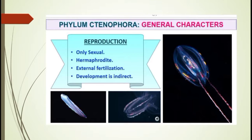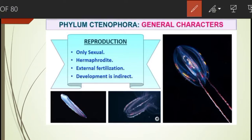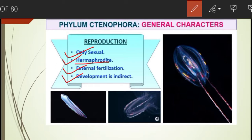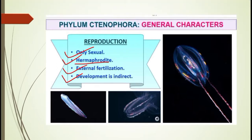Regarding reproduction, only sexual reproduction is observed in ctenophores. They are hermaphrodites — also called monoecious or bisexual — meaning both male and female reproductive systems are present in the same individual. Gonads are endodermal, fertilization is external, occurring in an external medium like water, and development is indirect, meaning they produce larvae in their life cycle.